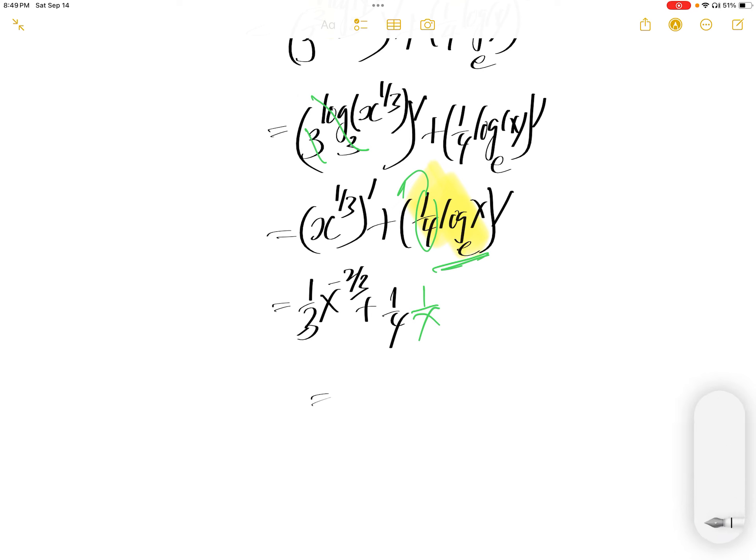Let us simplify. This is 1 third times 1 over x squared, and then cube root, sorry, plus 1 over 4x.